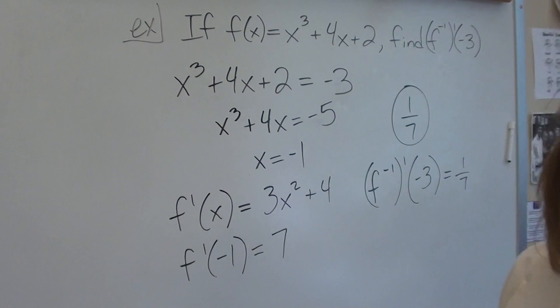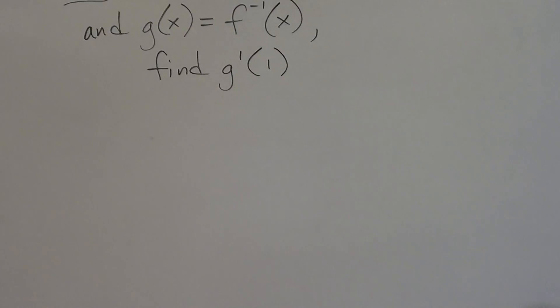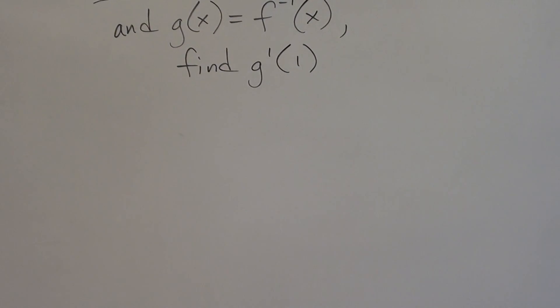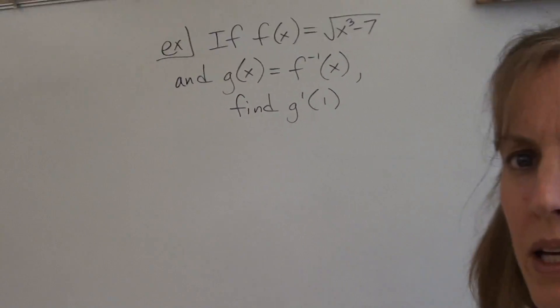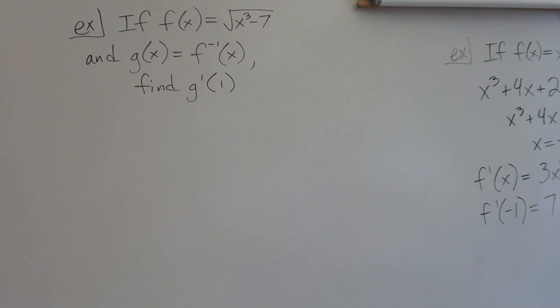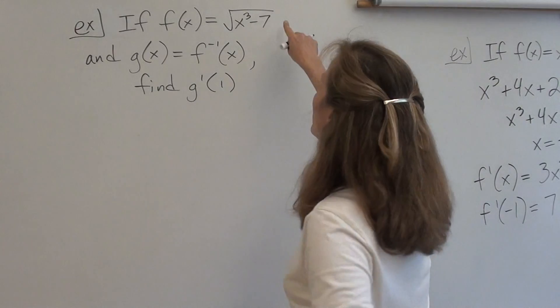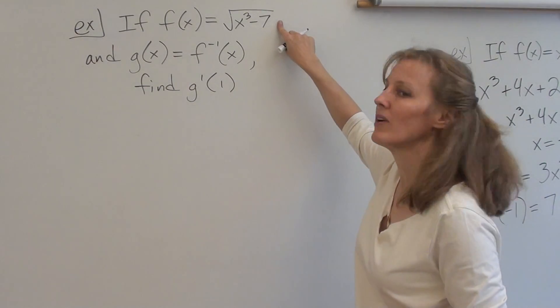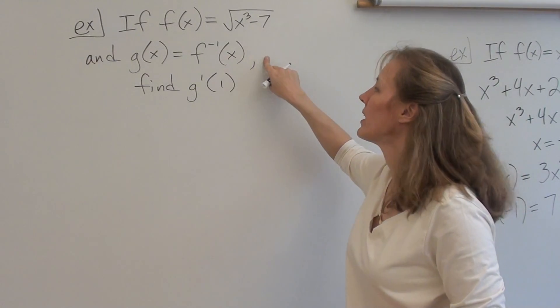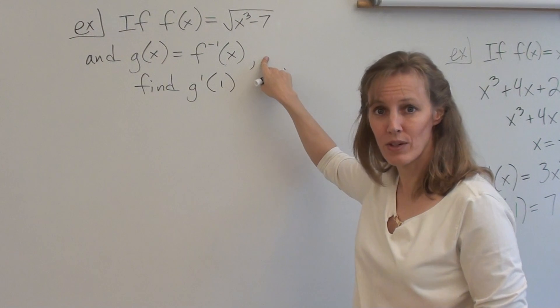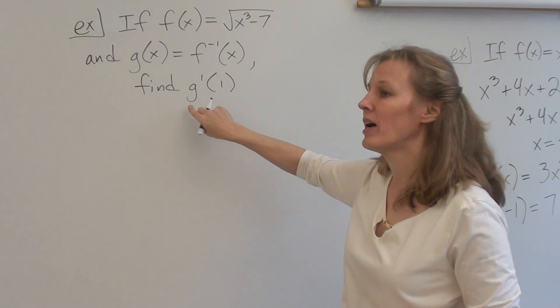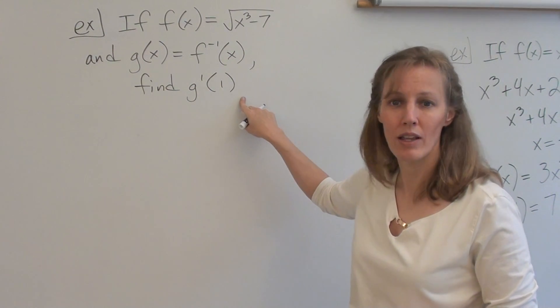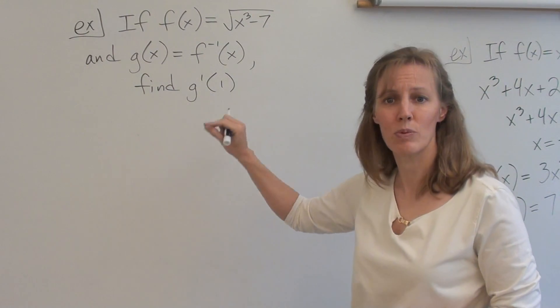If we do another example, got another one right over here, backing up a little bit. Okay, so suppose f of x is the square root of x cubed minus 7, and suppose g is the inverse of f of x. And we want to find g prime of 1. It's just another way of saying find f inverse prime of 1.